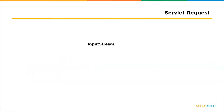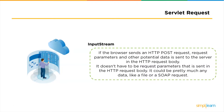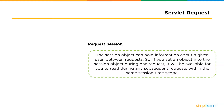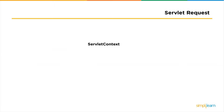We also have the input stream. If the browser sends an HTTP POST request, request parameters and other potential data are sent to the server in the HTTP request body — it could be data like a file or SOAP request. The next one is the request session: the session object can hold information about a given user between requests. If we set an object into the session during one request, it will be available during any subsequent requests within the same session time scope. Followed by the request session, we have the servlet context, which contains the metadata related to the application.